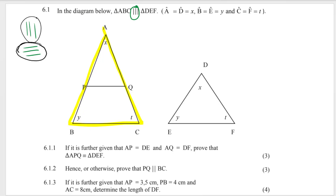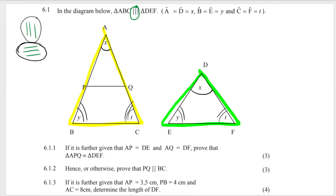So triangle ABC is similar to triangle DEF. Here's triangle DEF over here on this side. And they give me the following information: A is equal to D, which is equal to X — so they're telling me that this angle is equal to this angle. B is equal to E, which is equal to Y. And then finally, this angle is equal to this angle. So they obviously used angle-angle-angle to prove similarity. Three angles are equal in each of these triangles.